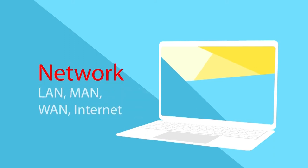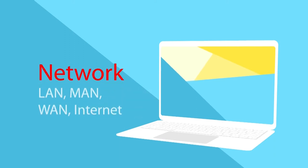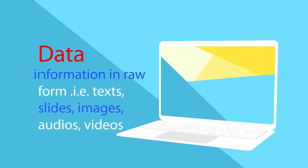The next component is network, which means the interconnection of different computers located at a distance, whether small or large — for example, LAN, MAN, WAN, and the Internet. Data means information in raw form, that is, text, slide, images, audio, and video. The next components are user interface and the database.